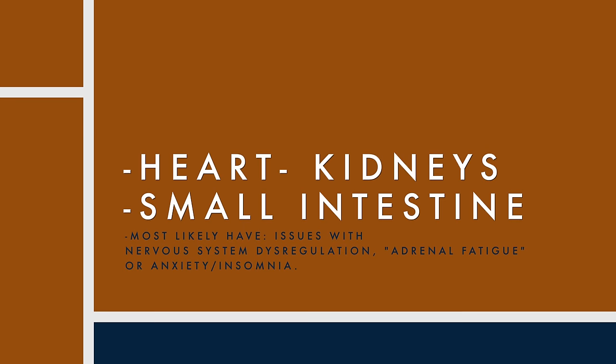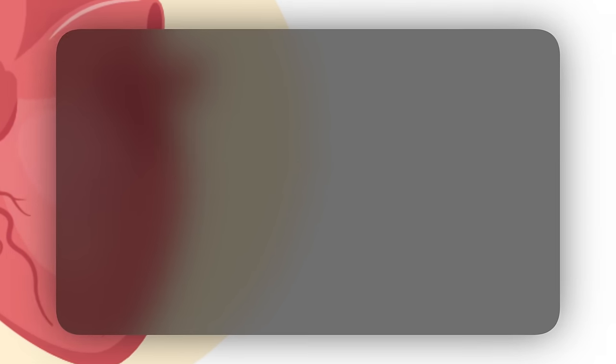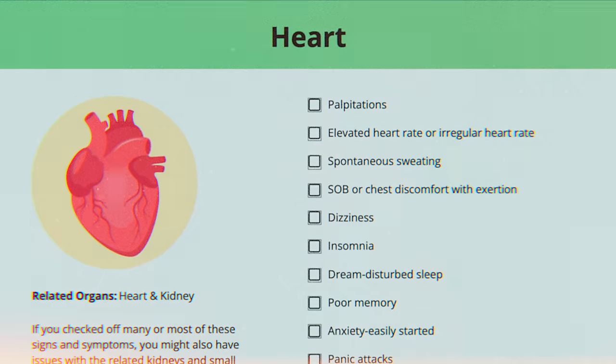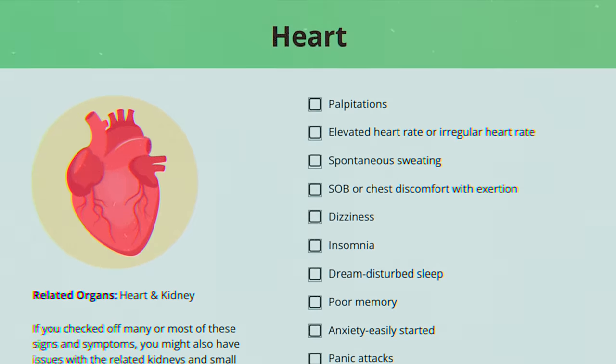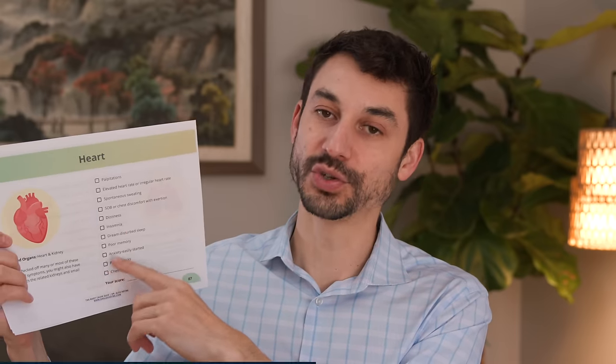Organ network four: the heart, kidney, and small intestine. The heart relates to functions connected to the anatomical heart — issues with circulation, blood pressure, and cardiovascular disease — but it also relates to the nervous system. The heart is like the emperor, the center of the spirit of a person. When there's a diagnosis of heart qi or heart yang deficiency, this mirrors symptoms of sympathetic dominance: heart palpitations, tachycardia, elevated heart rate under stress, and all kinds of irregular heartbeats. Physiological symptoms include palpitations, elevated heart rate, spontaneous sweating, dizziness, and lots of issues with sleep.